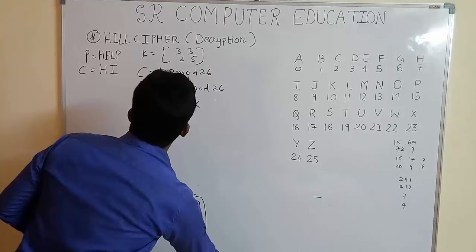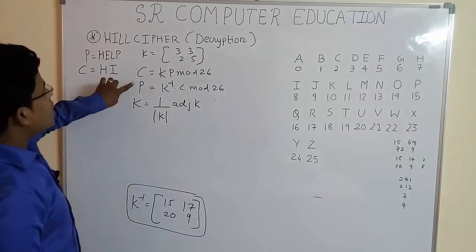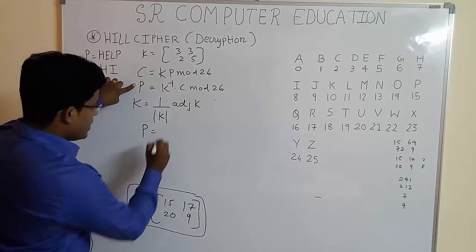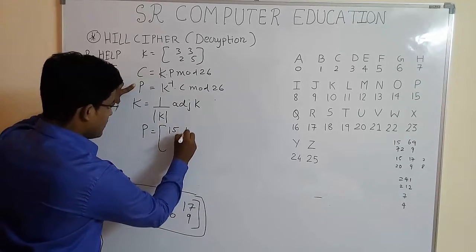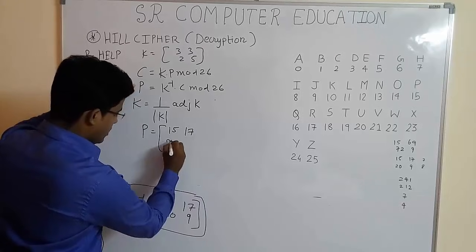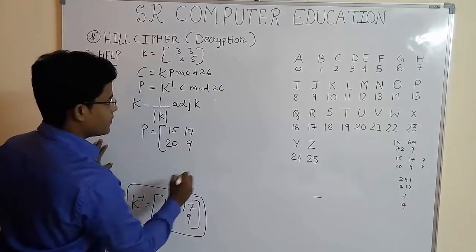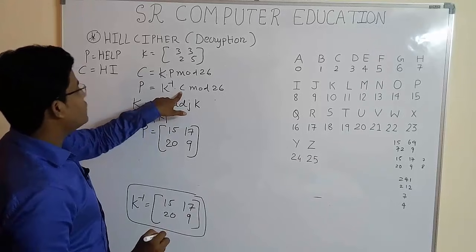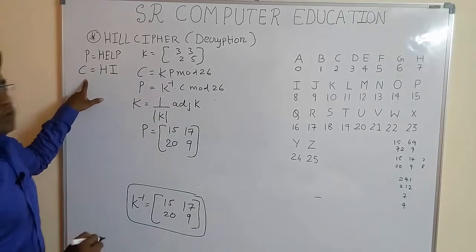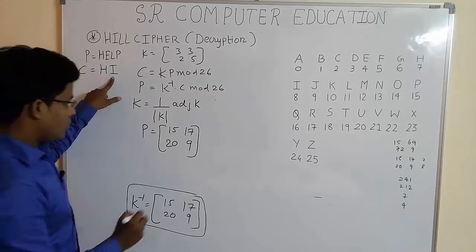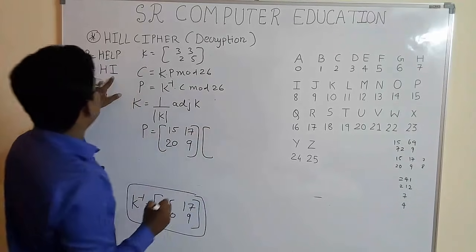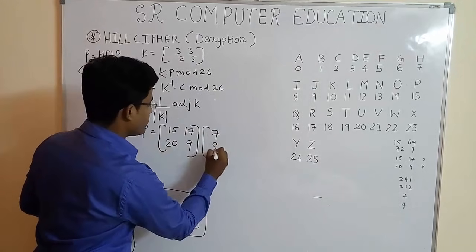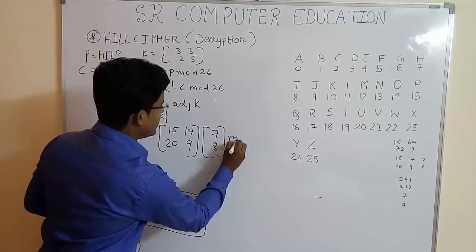Now substitute this value in our formula. Plaintext equal to K inverse is [15, 17; 20, 9]. And ciphertext C, we already know C was H and I, so convert that alphabet into matrix form: H is 7 and I is 8, mod 26.